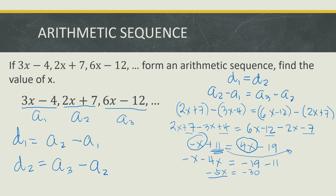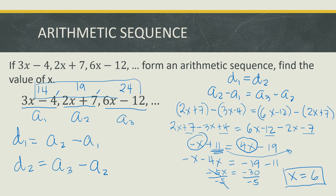To find x, divide both sides by negative 5. The x value is positive 6. Substituting x equals 6 into the terms: 3 times 6 minus 4 gives 14 for the first term; the second term is 2 times 6 plus 7, which is 19; and 6 times 6 minus 12 gives 24. These are the first three terms of the arithmetic sequence. The answer is x equals 6.